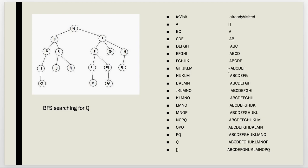Looking at our already-visited list, we can see the order: A, B, C, D — so the next one is G. We add G to our already-visited list, and whatever is connected to G — which is nothing — gets added. Then we move to H, put H on our already-visited list, and put N on the to-visit list because that's what's connected to H. Next we go to I, which goes onto our already-visited list.